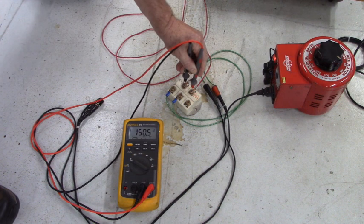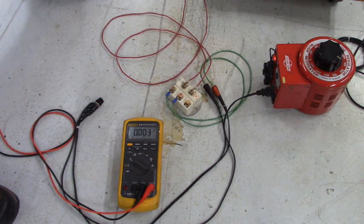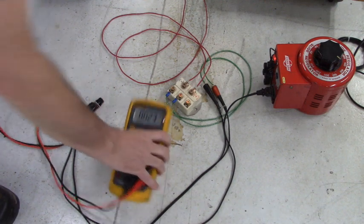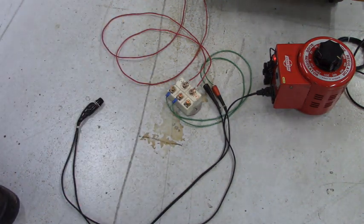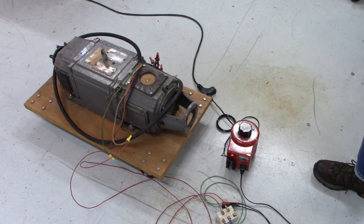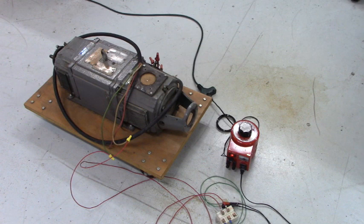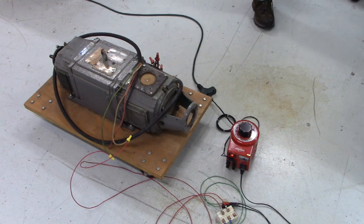And you can hear the windings of the field singing in there, we have 150 volts DC field voltage. Now, you have field voltage that was created not from a DC drive, but from a variac and bridge rectifier.